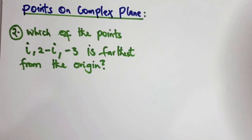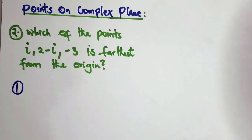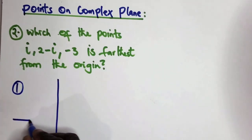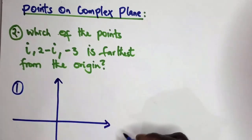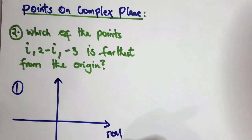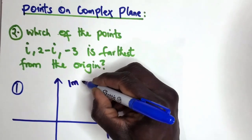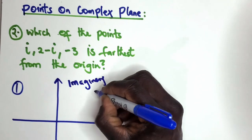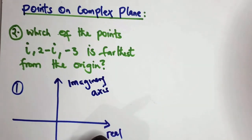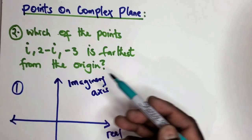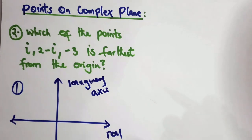Which of the following points is the farthest from the origin? There are two steps you can do. One is to plot it on the complex plane. All you have to do is grab the points. That is the real axis and this is the imaginary axis. You are told which one of the following points is the farthest from the origin.